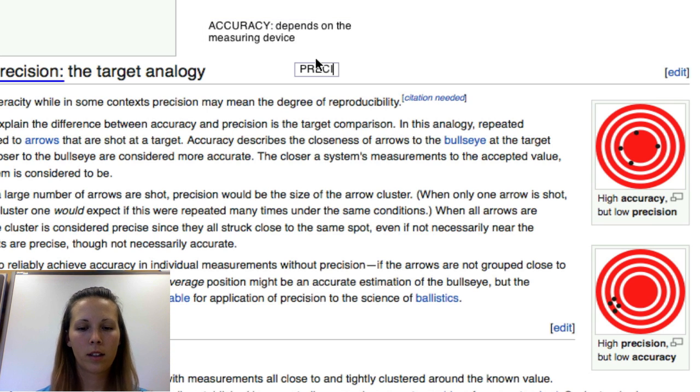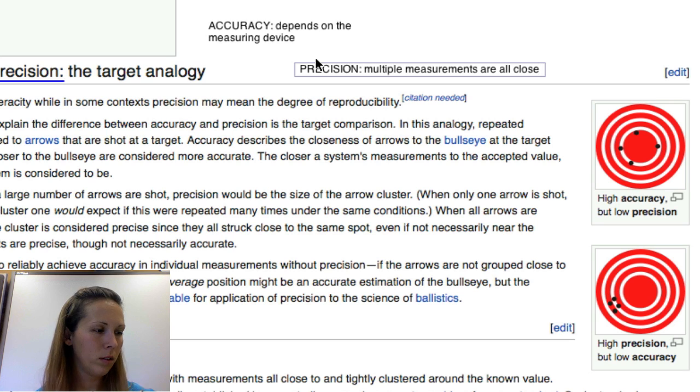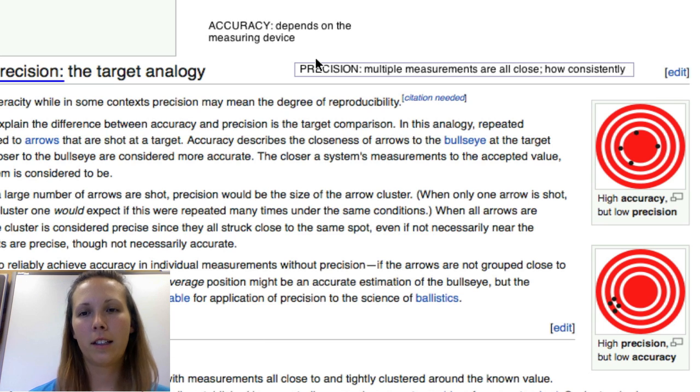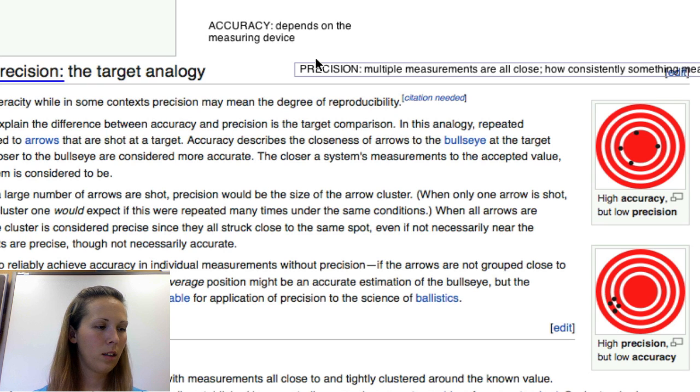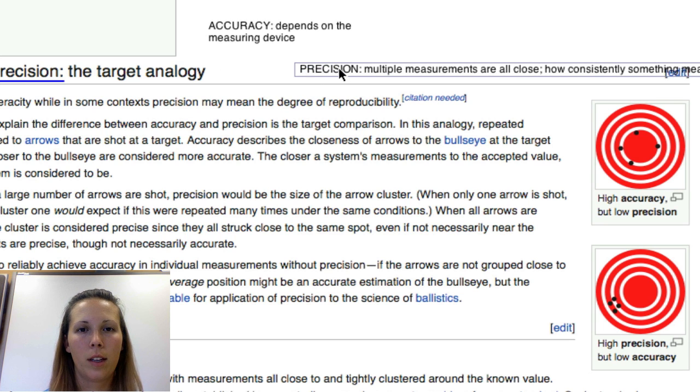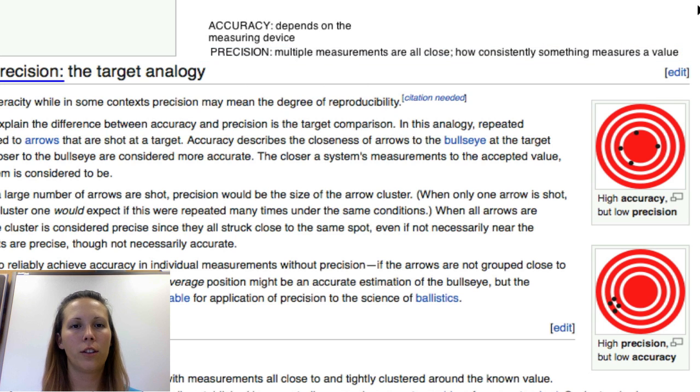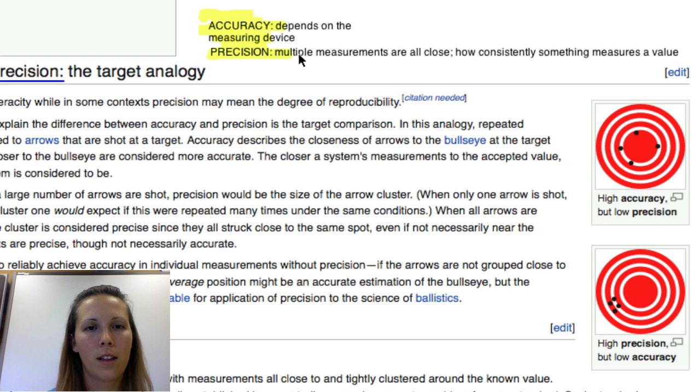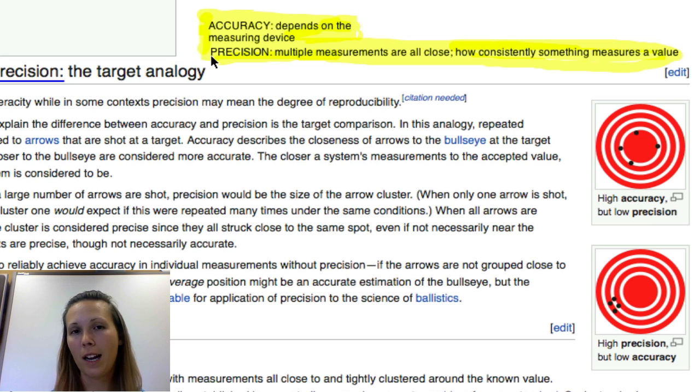Whereas precision is getting multiple measurements that are all close. Or in other words, how consistently something measures to a value. These are my definitions of accuracy and precision. Write those down. Pause if you have to while I'm coloring this in. These are my definitions for accuracy and precision. This all comes out of significant figures. How accurately and how precise we can measure something.